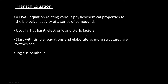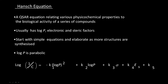We looked at the Hansch equation — this is an equation relating various physicochemical properties to the biological activity. We have log P, we have the electronic and steric factor. You may start with a simple relationship: activity on the left hand side and on the right hand side log P, which can have a parabolic type of relation. It need not always be parabolic — it can be linear also. Then we have the electronic and steric effect, plus a constant. That is the Hansch equation.